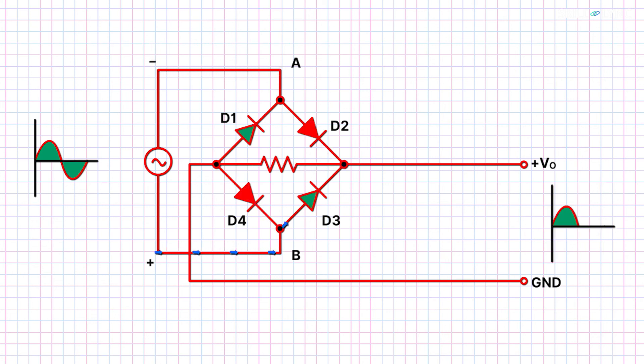In the second half of the cycle, point B is at a higher potential than point A. Hence, here the current flows in the opposite direction. Here, diodes D3 and D1 are forward-biased and thus current flows through these diodes. Diodes D2 and D4 are reverse-biased and act as open switches for the second half of the AC wave, thus allowing only the second half of the AC current to flow through D3 and D1 and we get a non-alternating or a DC output.